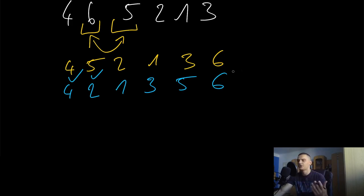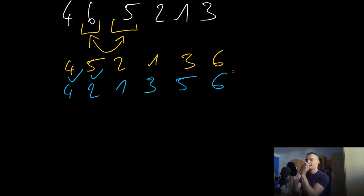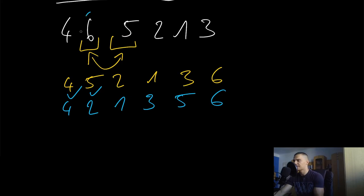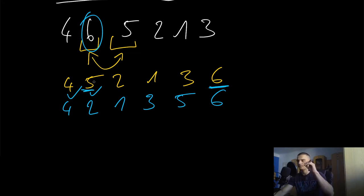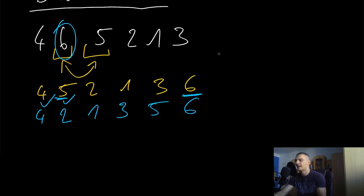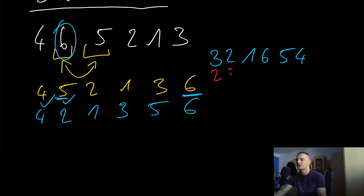In each iteration, at least one more element ends up in the right position. What we're doing is filtering out the largest element and shifting it as far right as possible. We started with six — it was the largest, so it ended up in the last position. Then we repeated and five was the next largest. Sometimes you'll also be shifting values that aren't the overall maximum.